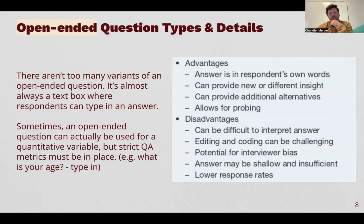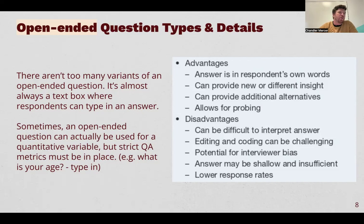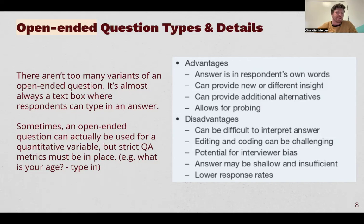In survey tools, you can do what's called validation, which will say in this text box the input must be numeric, and it must be a number between zero and 100. So if you're asking what's your age and you want someone to only enter a number, you'd put that validation in there. For the most part, open-ended questions are type-in responses where people talk about their feelings and thoughts in their own words, which provides that qualitative color you'd get from a focus group or in-depth interview.